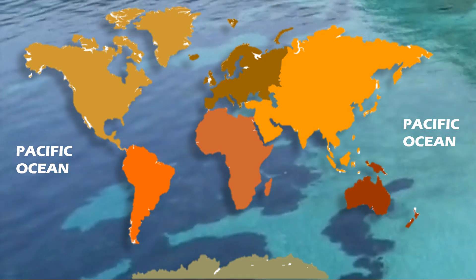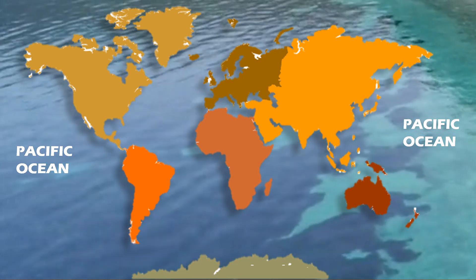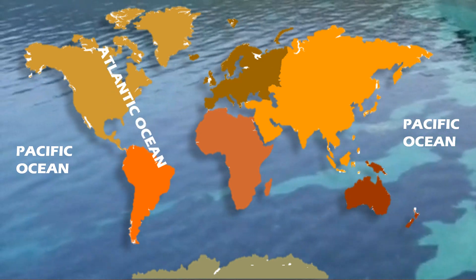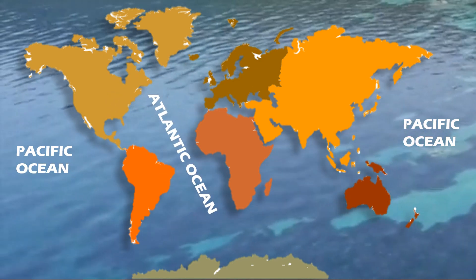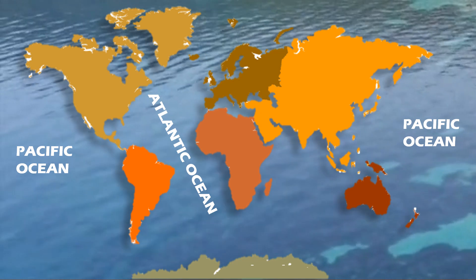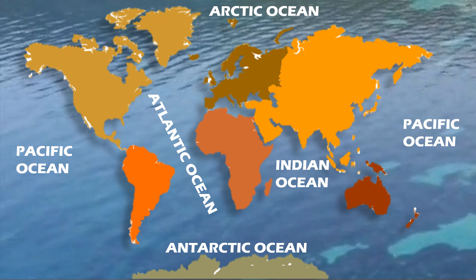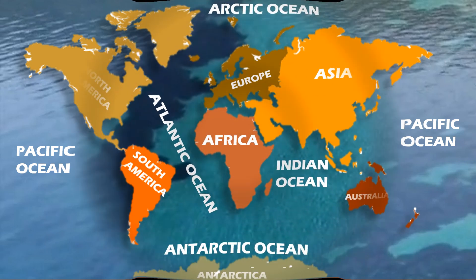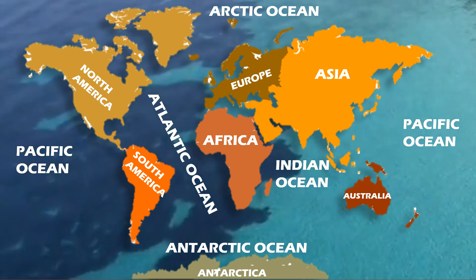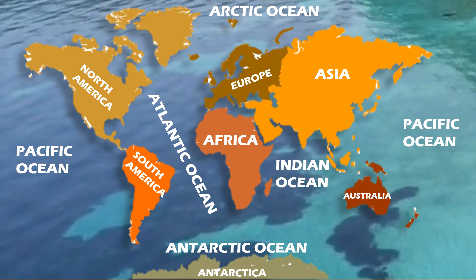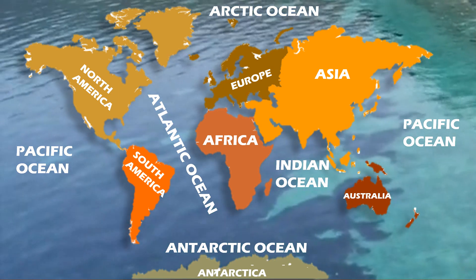Let us identify these five oceans in the world map. This is Pacific Ocean — the largest ocean in the world. This is Atlantic Ocean. This is Indian Ocean. This is Antarctic Ocean — it is also called the Southern Ocean. This is Arctic Ocean.